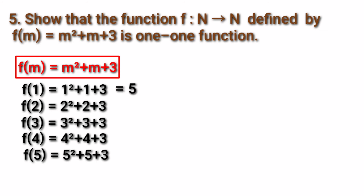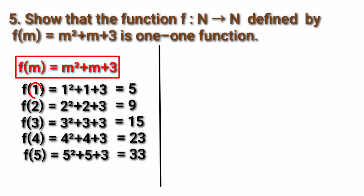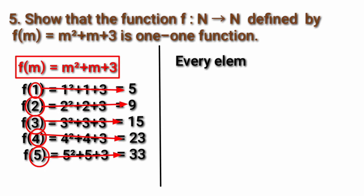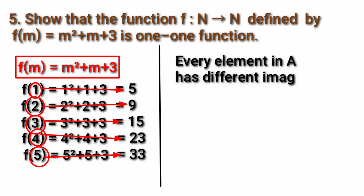Now let us find the answers: 1² = 1, 1+1=2, 2+3=5. 2²=4, 4+2=6, 6+3=9. 3²=9, 9+3=12, 12+3=15. 4²=16, 16+4=20, 20+3=23. 5²=25, 25+5=30, 30+3=33. For every element in A there are different images in B: for 1 the answer is 5, for 2 it is 9, for 3 it is 15, for 4 it is 23, and for 5 it is 33. Since all terms in the formula are positive, as m increases the answers increase, so every element in A has a different image in B.